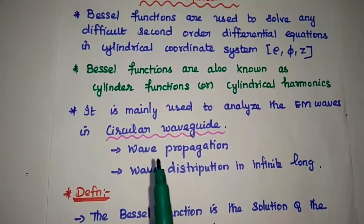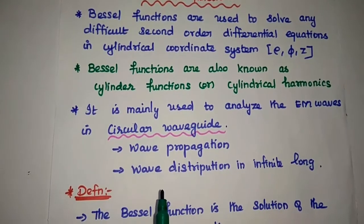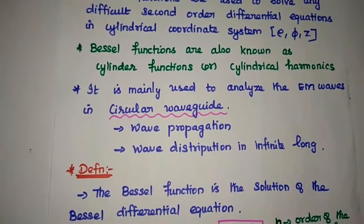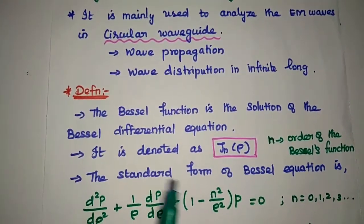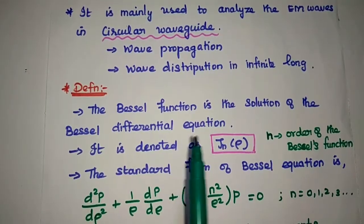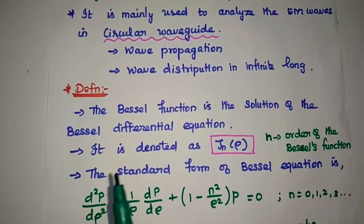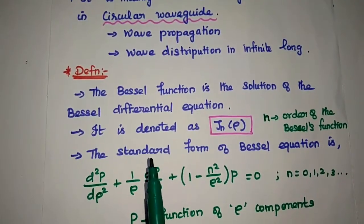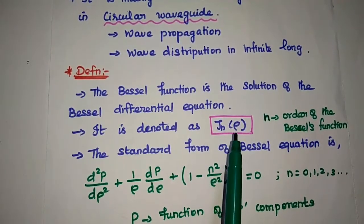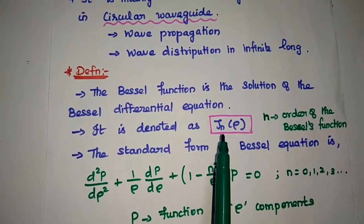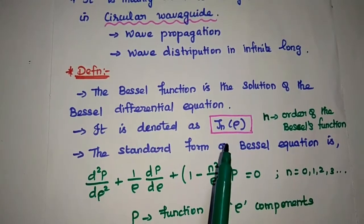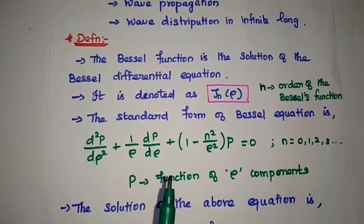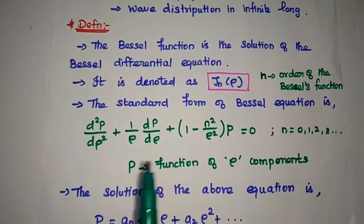We can analyze the wave propagation and wave distribution in an infinitely long waveguide. The Bessel function is defined as the solution of the Bessel differential equation. It is denoted as J subscript N of rho, where N represents the order of the Bessel function. The standard form of the Bessel equation is given here.